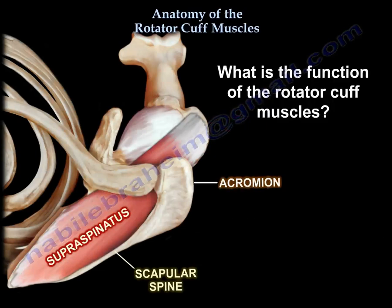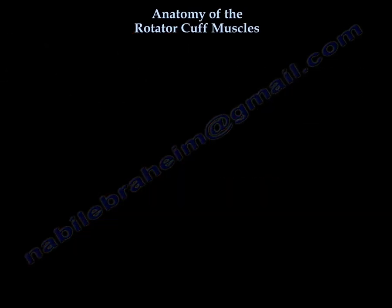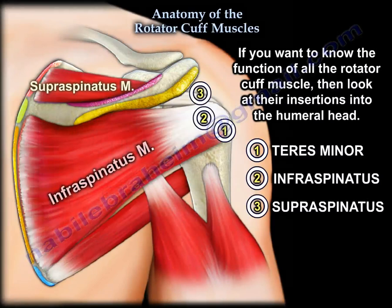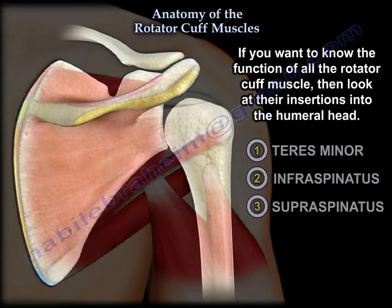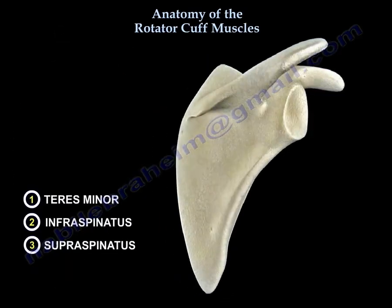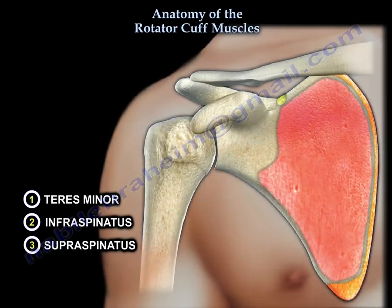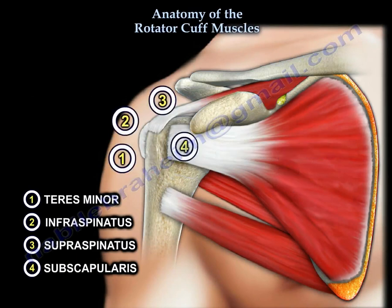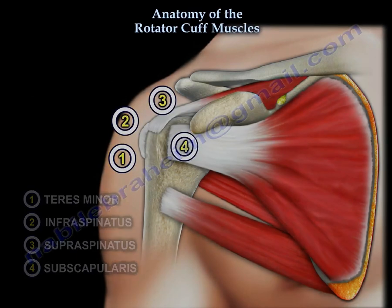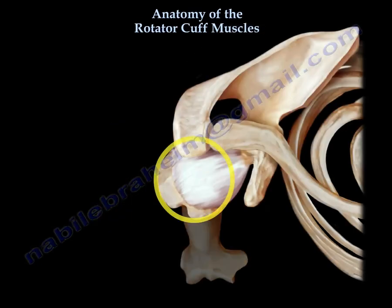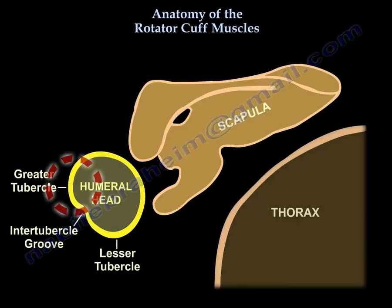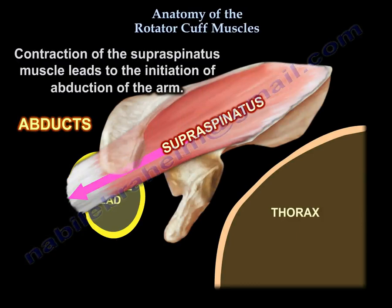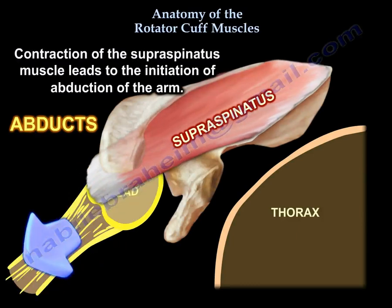To know the function of all rotator cuff muscles, look at their insertion. Looking at the model, this is where the supraspinatus inserts. When the supraspinatus contracts, it leads to initiation of abduction of the arm.